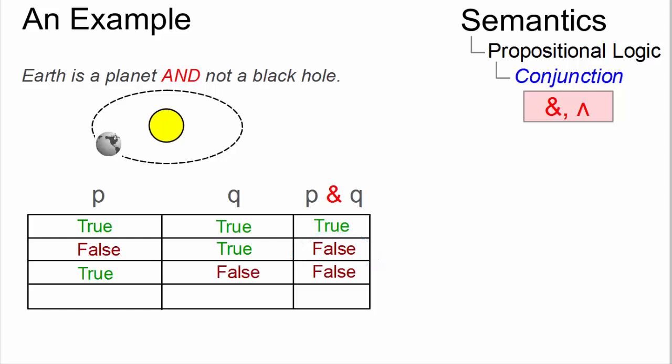Similarly, if Q is false and the Earth is in fact a black hole, P and Q is false too. And if both propositions are false, that is, Earth is not a planet and it is a black hole, then P and Q is false too.